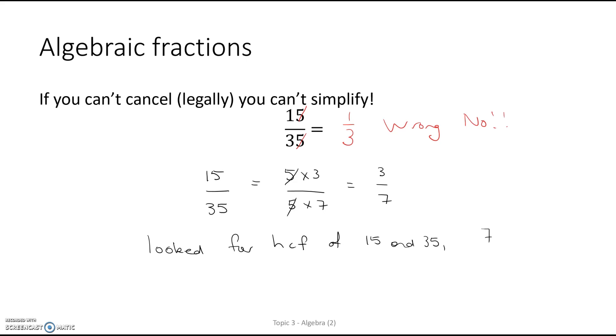Oops, it was 5. It was 5. And divided top and bottom by 5, and went from there. Now, we can do the same for algebra. We find the highest common factor, and then we cancel them out.